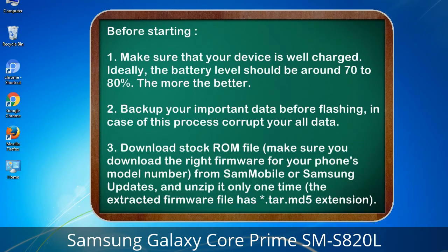Before starting: 1. Make sure that your device is well charged. Ideally, the battery level should be around 70 to 80% — the more the better. 2. Back up your important data before flashing, in case this process corrupts your data. 3. Download the stock ROM file and make sure you download the right firmware for your phone's model number.